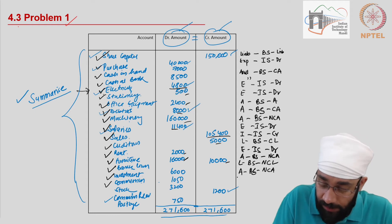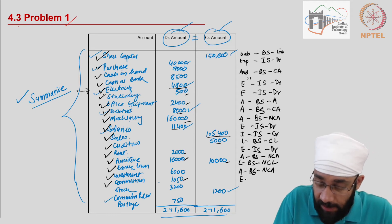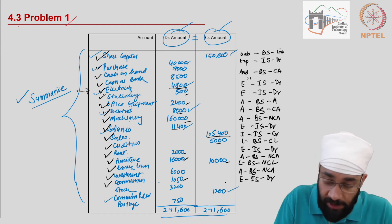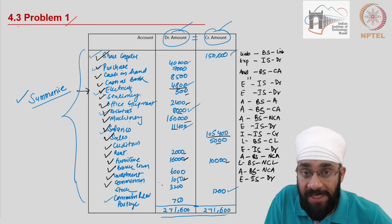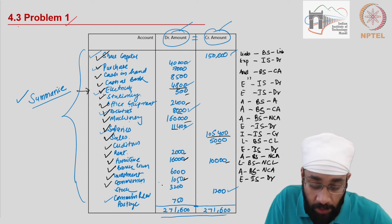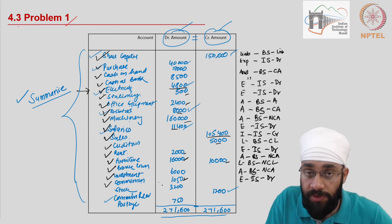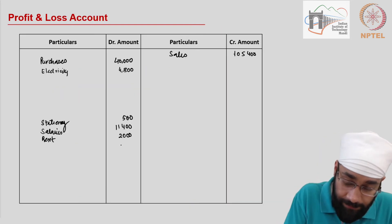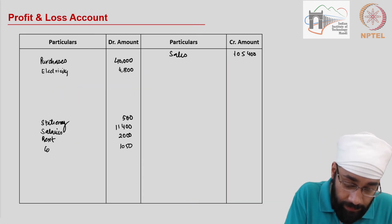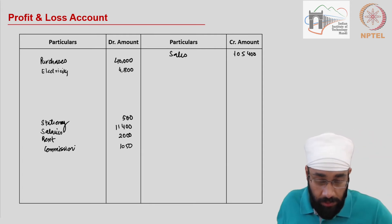Commission 1,050 — this is an expense since it is on the debit side. It goes in the income statement on the debit side. All expenses have debit balances, so if the amount is written on the debit side, we know this is an expense. Commission is 1,050.